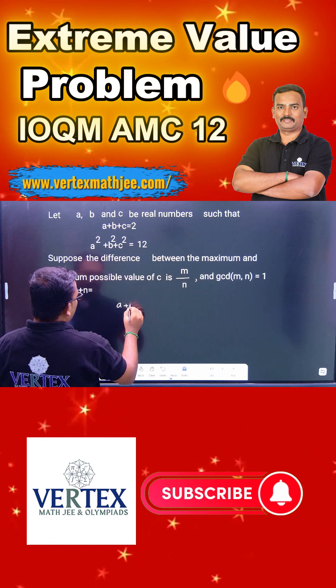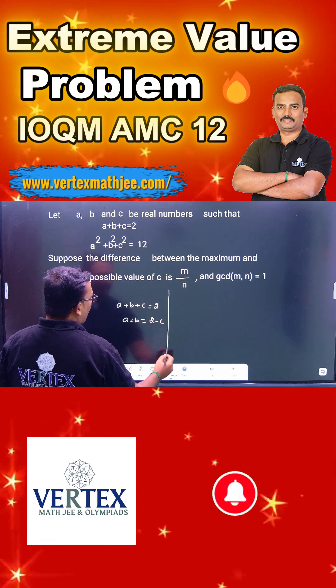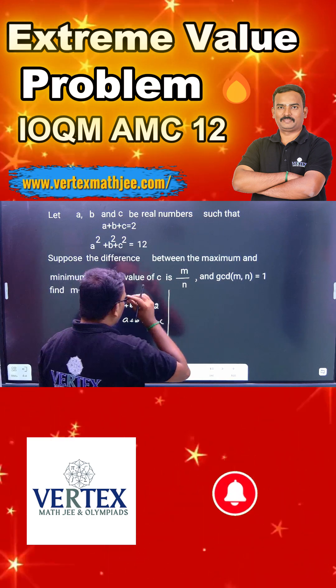Then you can see here a plus b plus c equals 2 is given. So a plus b you can write as 2 minus c. You have to write in terms of c because we need to find the range of c.